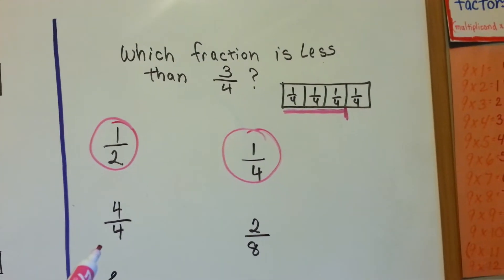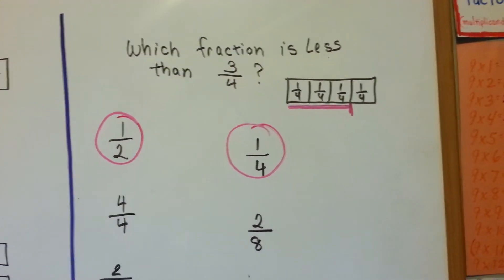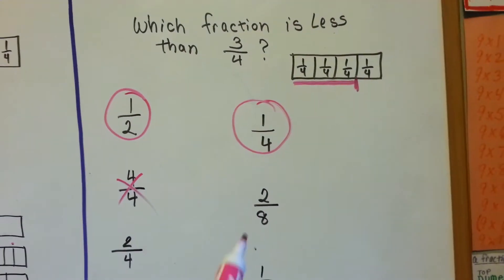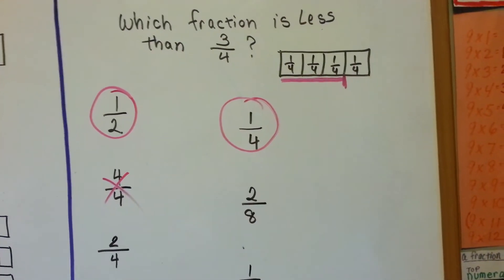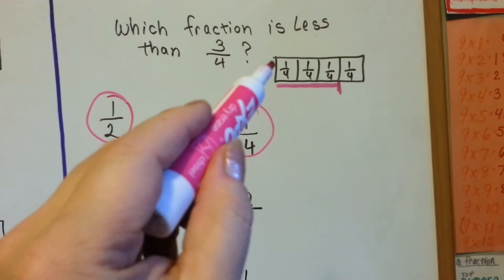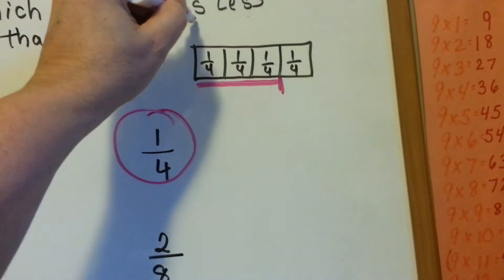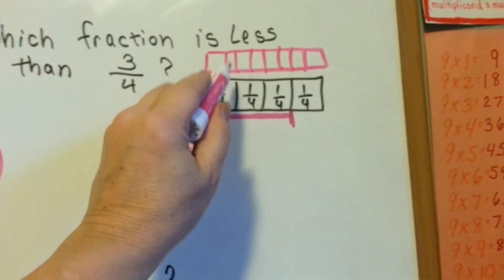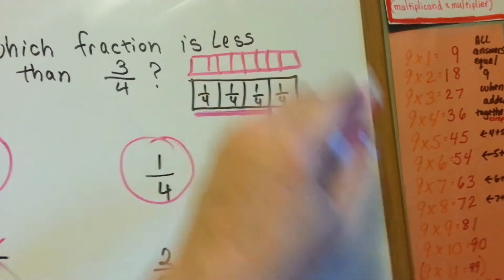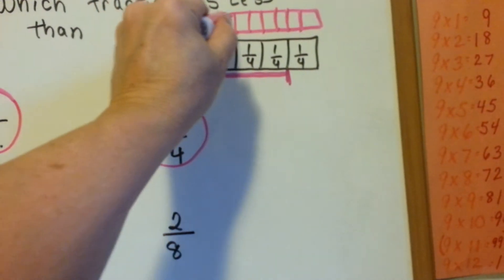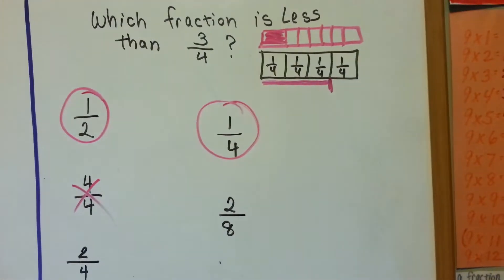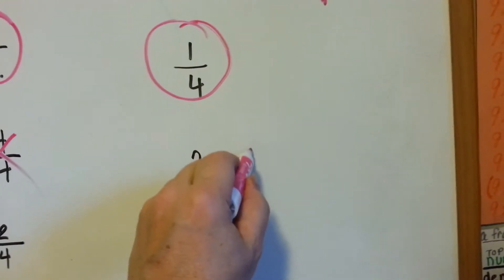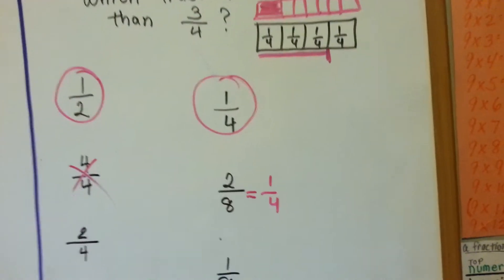How about four-fourths? Is four-fourths less than three-fourths? One-two-three-four — that would be the whole thing. That's not smaller. How about two-eighths? We've got fourths — all you have to do is split a fourth in half. Each one of these is an eighth: one through eight. Two of them would be right there — the same as one-fourth. Is two-eighths smaller than three-fourths? Yes, it is.